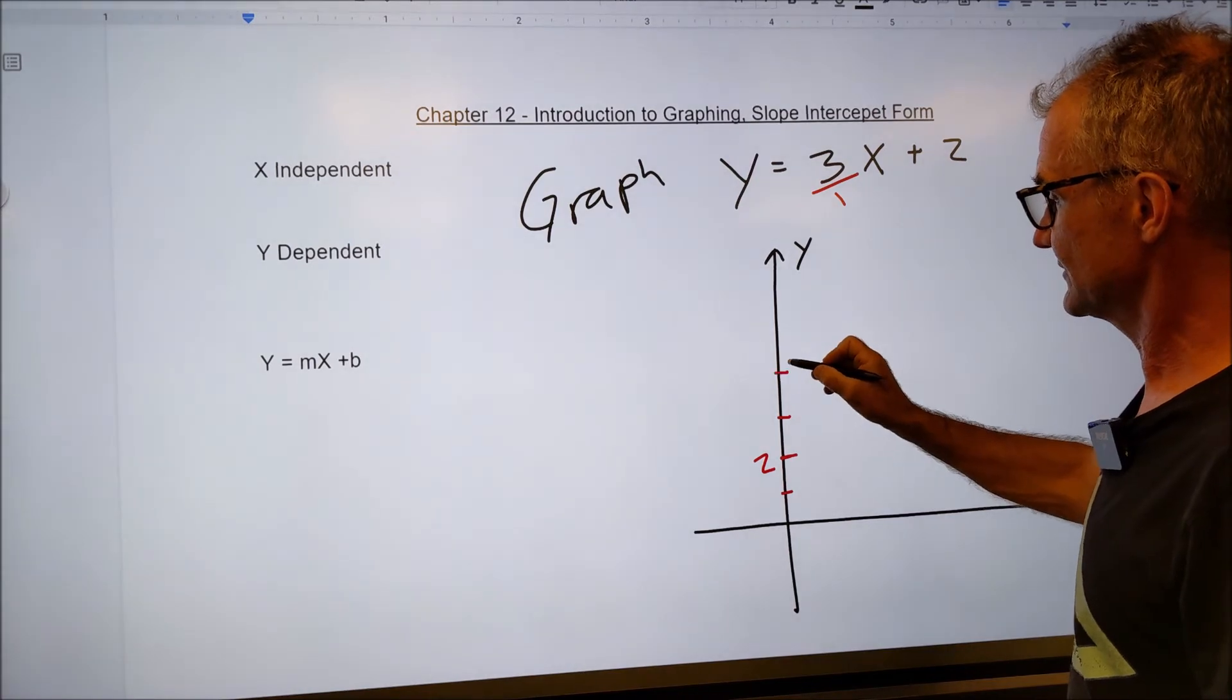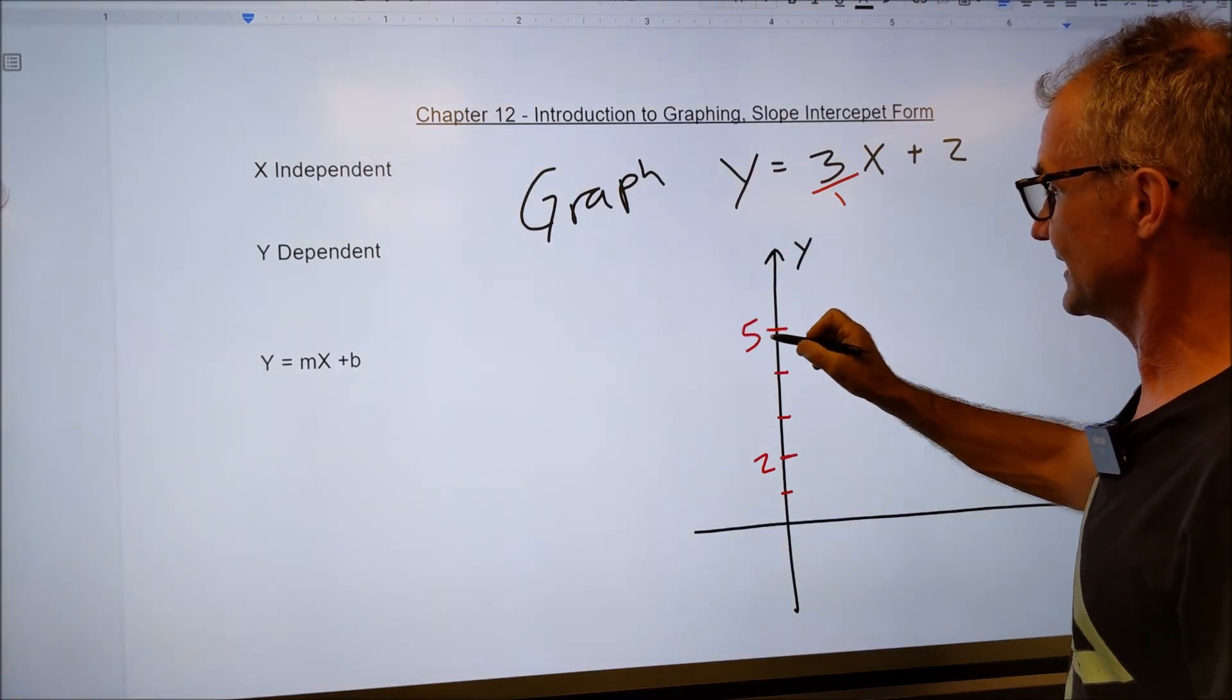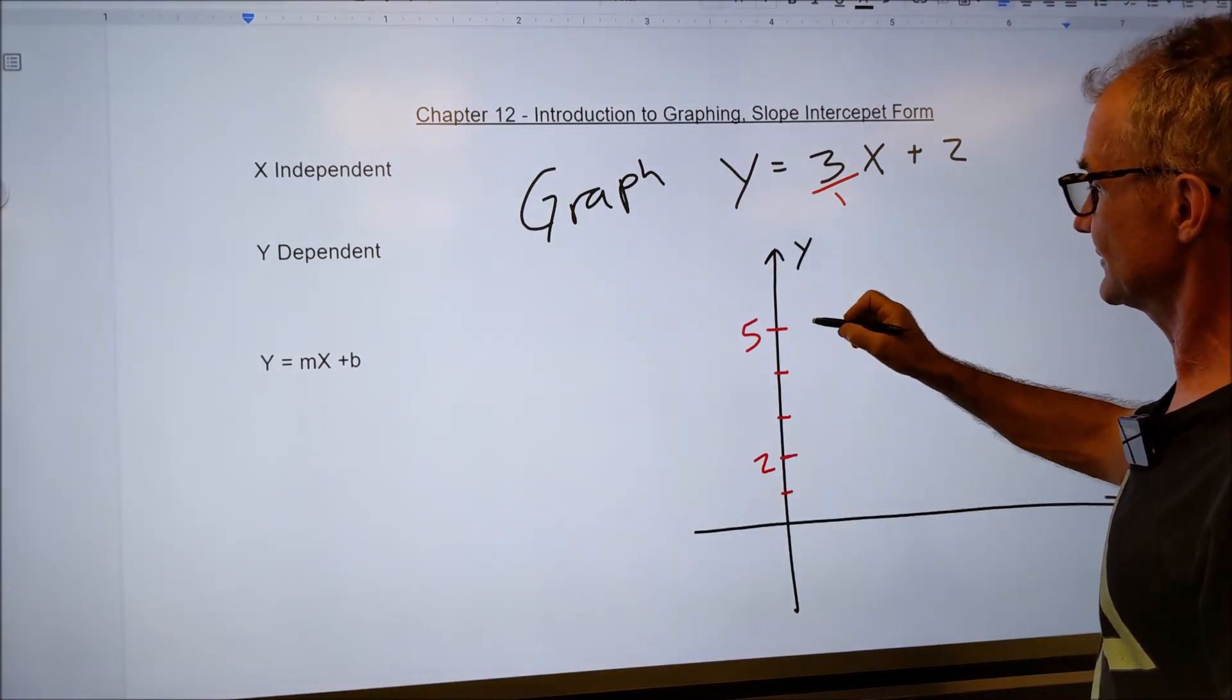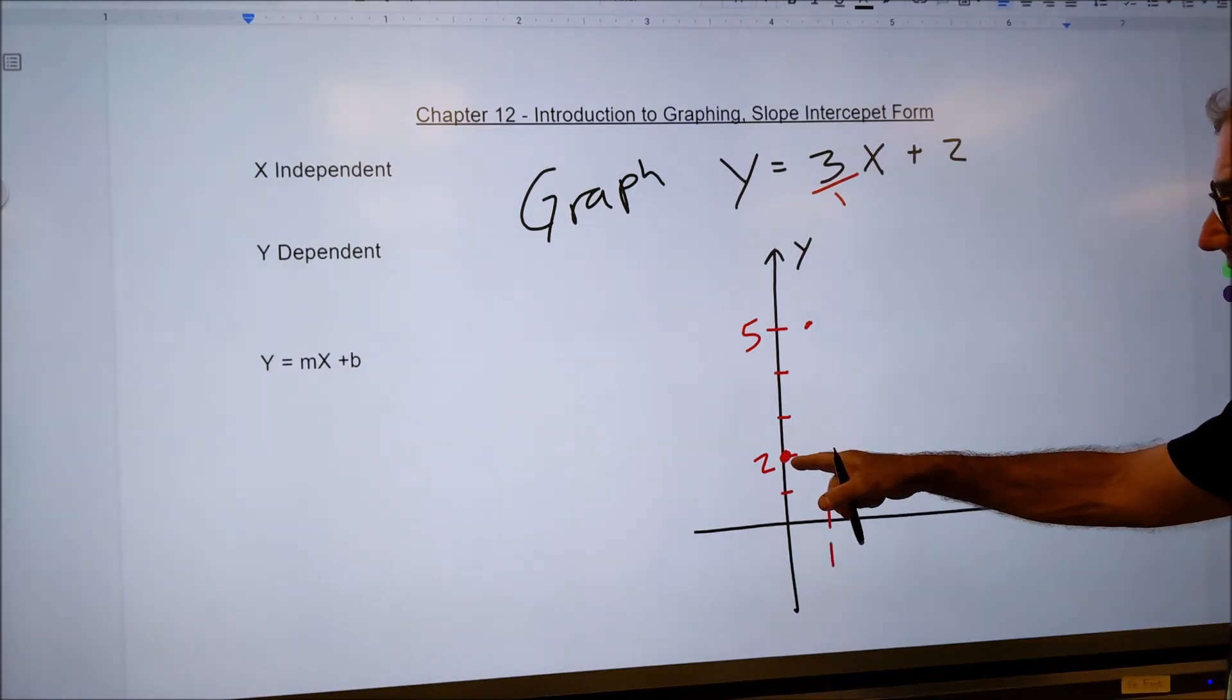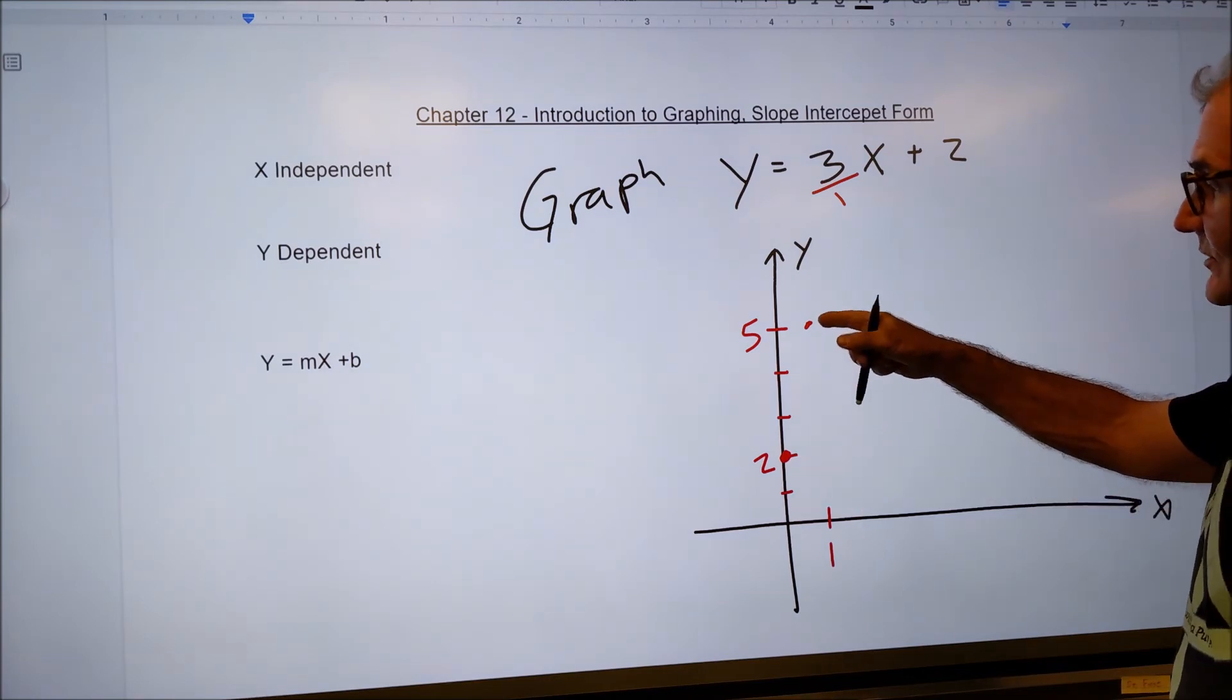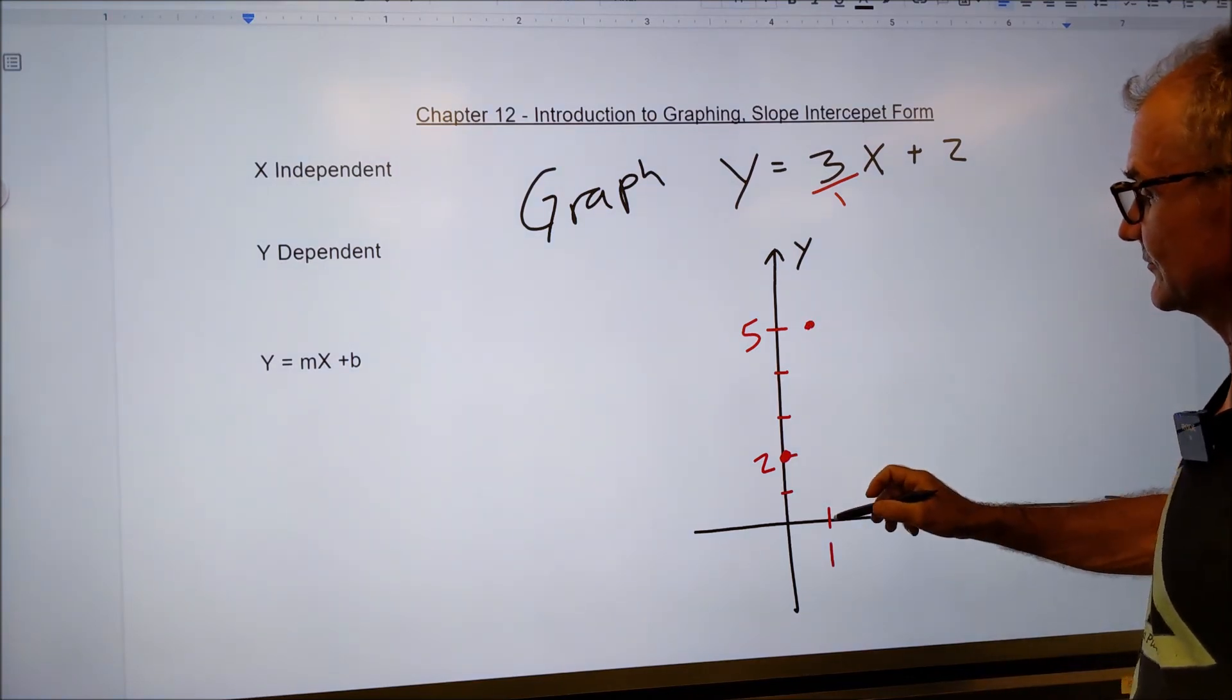So I rise one, two, three. That'll put me at five. Rise three, run one. It'll be right here. So I have one ordered pair here at zero two, one ordered pair right here at one five.